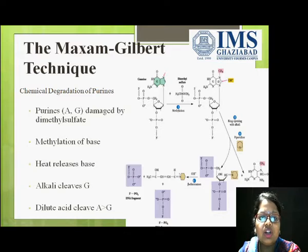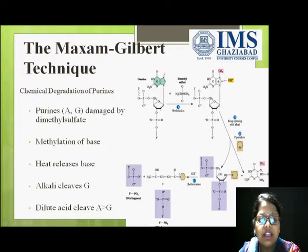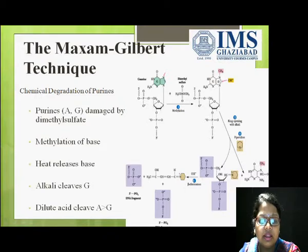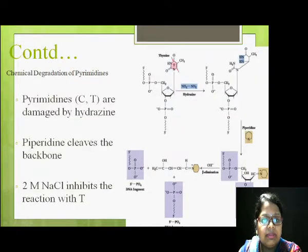It involves chemical degradation of both types of bases — purines and pyrimidines. Purines, as you know, are adenine (A) and guanine (G). They are damaged in the presence of the chemical dimethyl sulfate, which causes methylation of the base. Heat is released and there is a cleavage with the help of piperidine at the G base, which is the base modified by dimethyl sulfate.